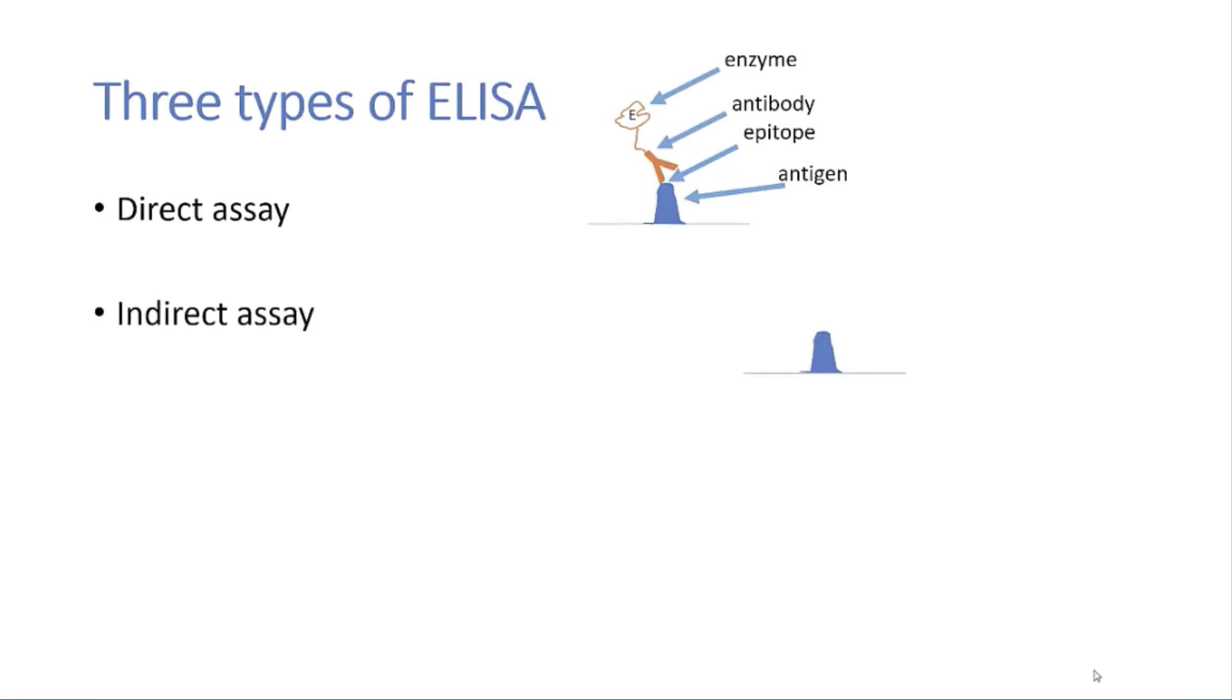An indirect assay is more sensitive because it requires two very specific reactions. A primary antibody binds to the antigen very specifically. And then a secondary antibody recognizes the primary antibody. And it is the secondary antibody that has the enzyme then attached to it.